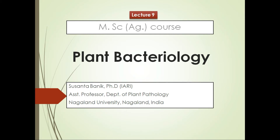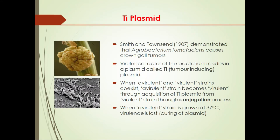Hello everyone. In the previous class we talked about plasmids, and in today's class we will learn about a plasmid in a plant pathogenic bacterium that is essential for pathogenicity — the Ti plasmid. It is required for pathogenicity of the bacterium. It was Smith and Townsend in 1907 who demonstrated that Agrobacterium tumefaciens causes crown gall or tumors in plants, and the virulence factor of the bacterium resides in this plasmid, called the tumor-inducing or Ti plasmid.